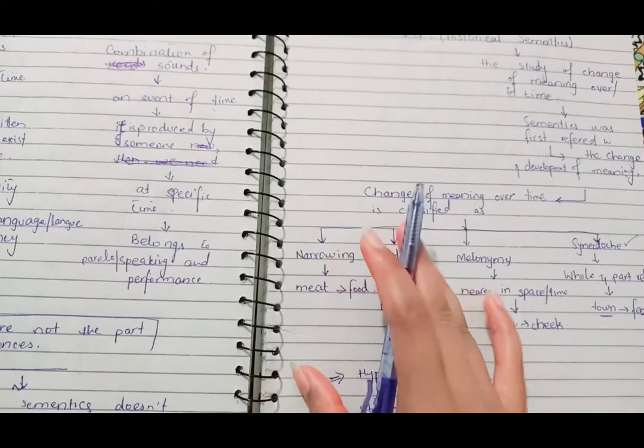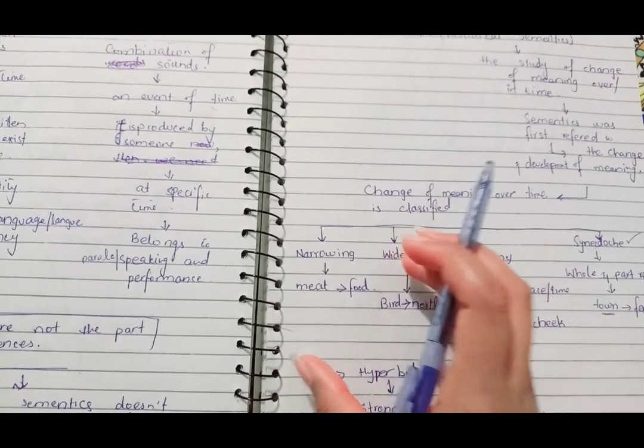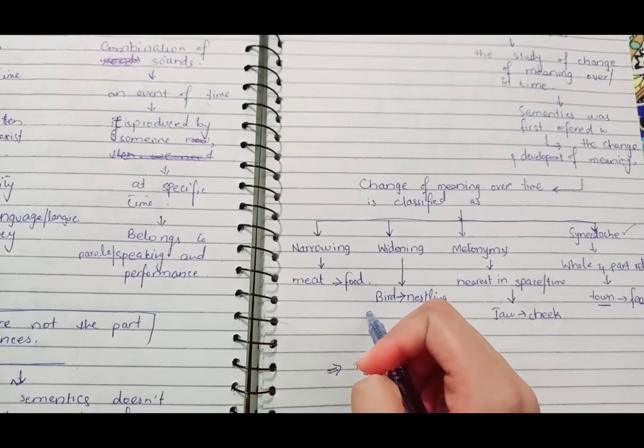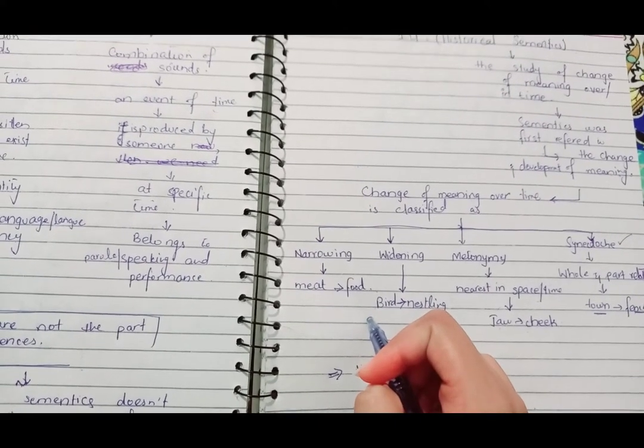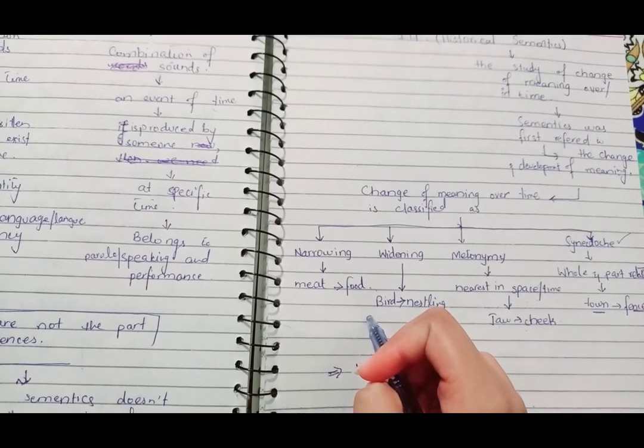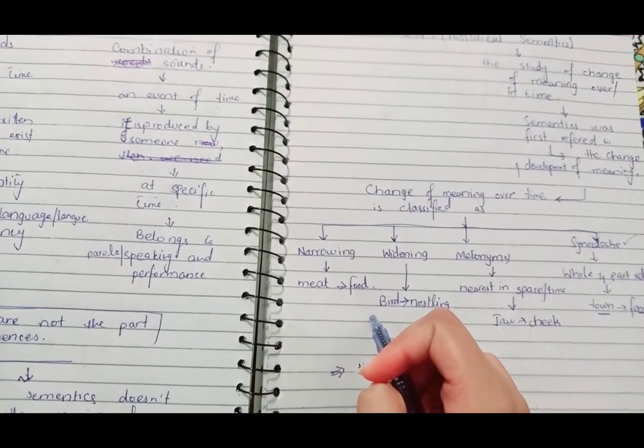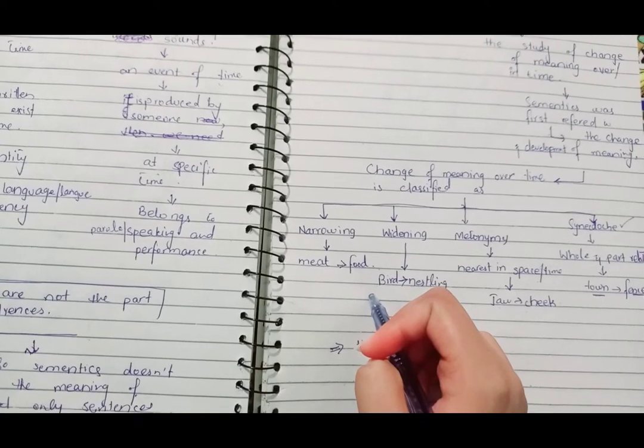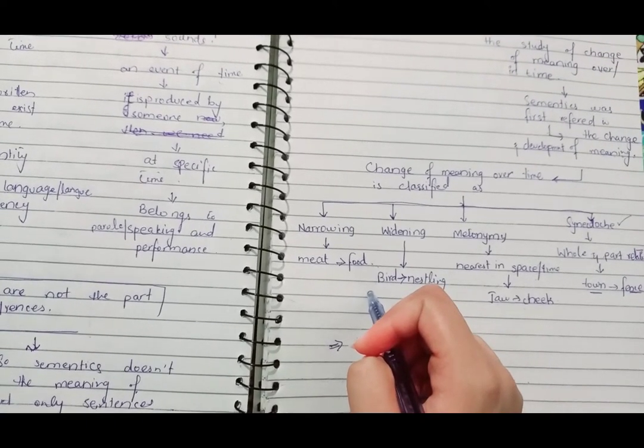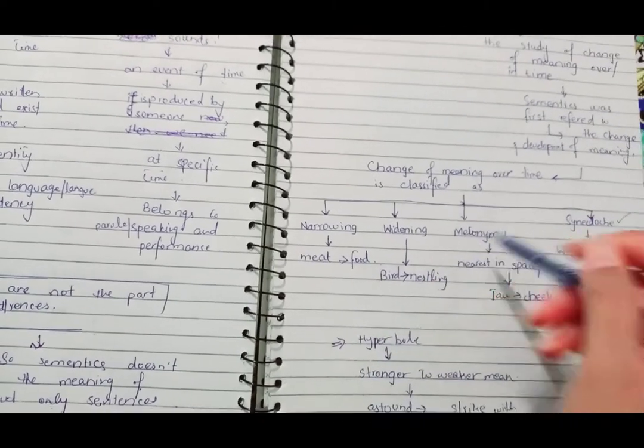So the term meat narrowed from the term food to meat. Now widening: we can say that in previous times the word only referred to the older words, but now it refers to the older and the adult words as well. So the term widened from the previous time.